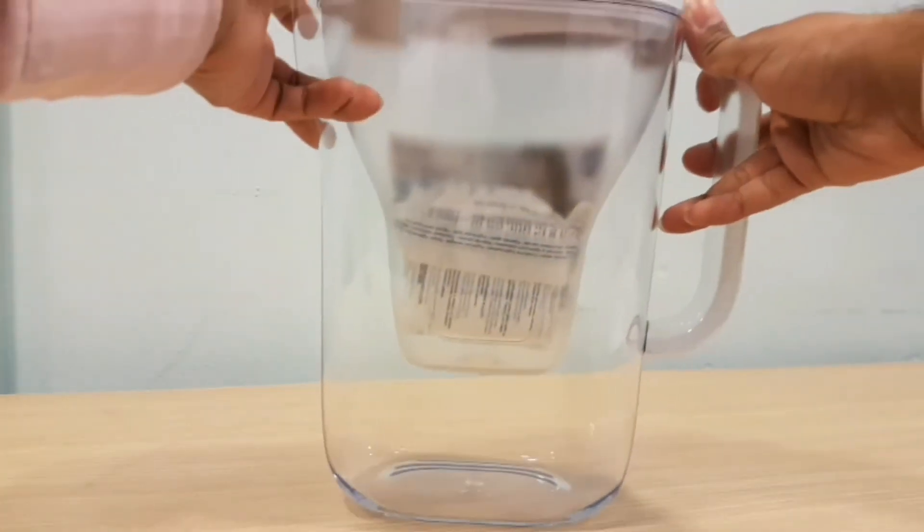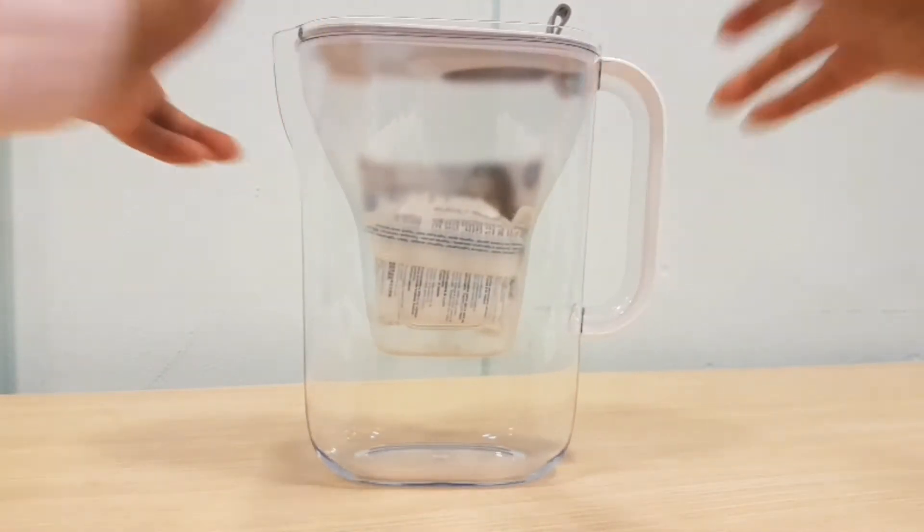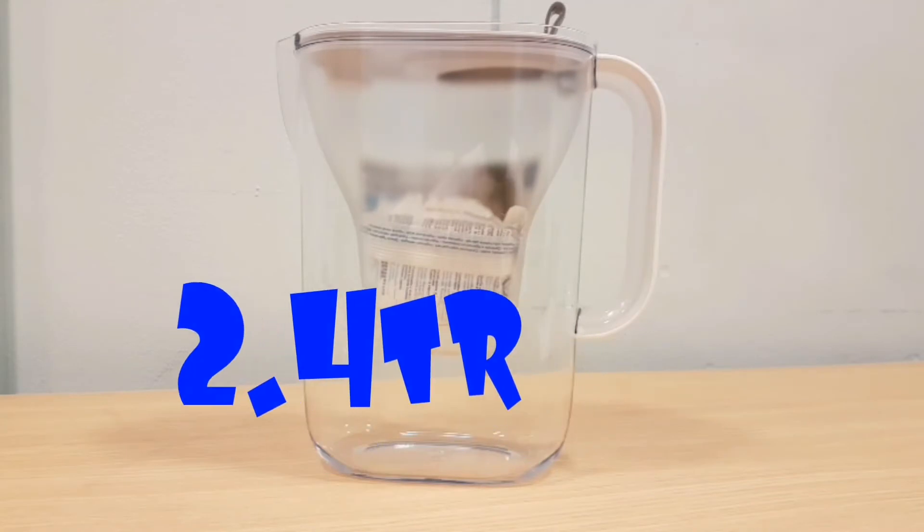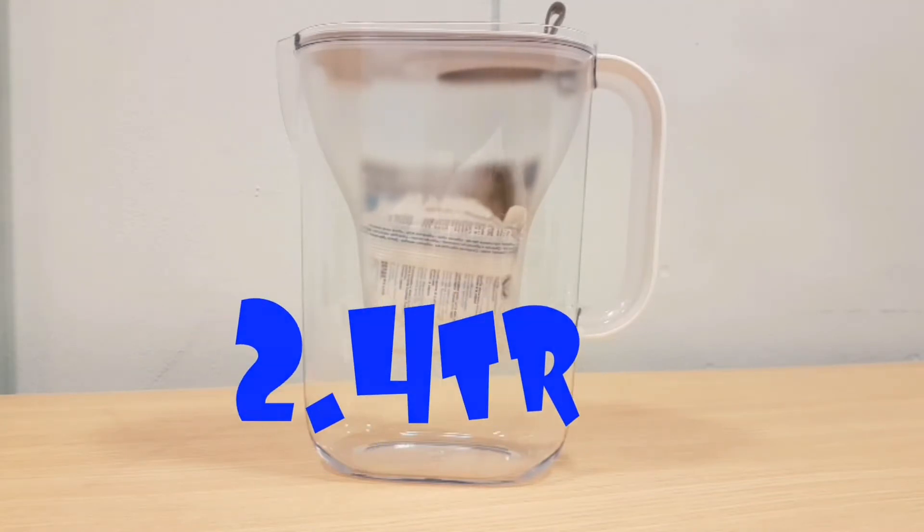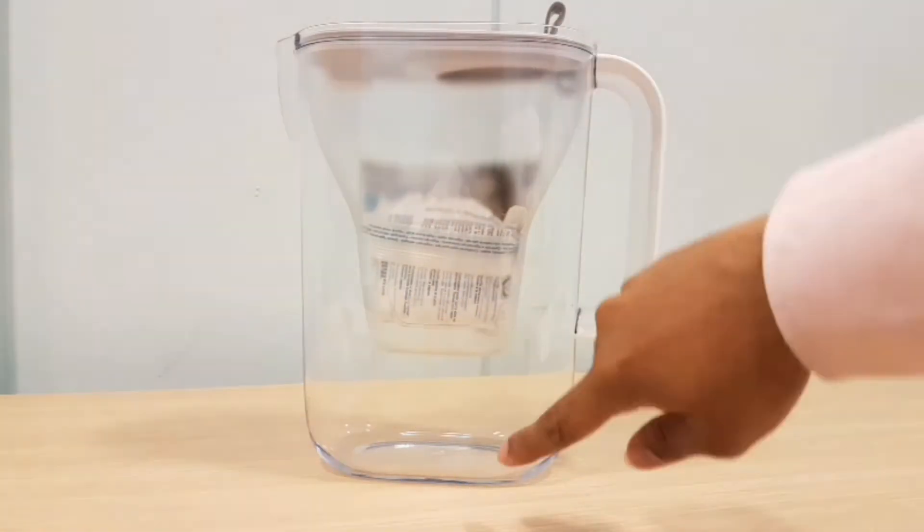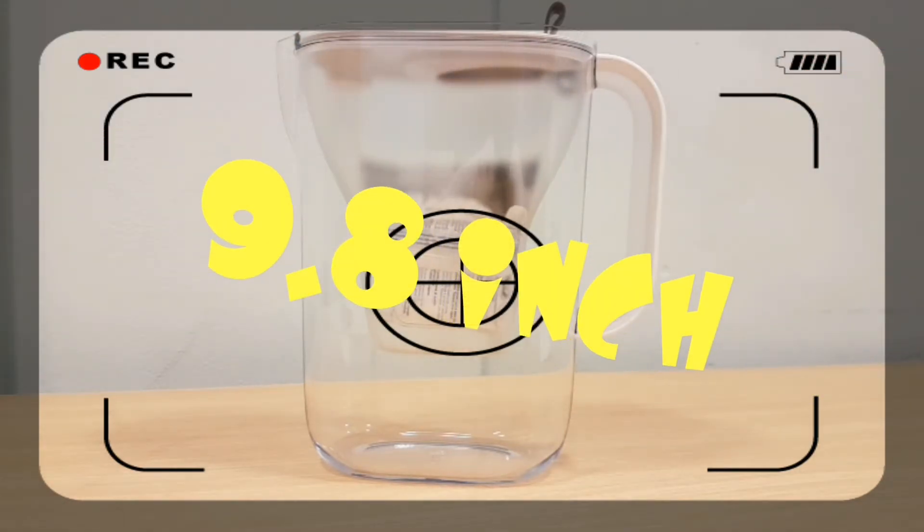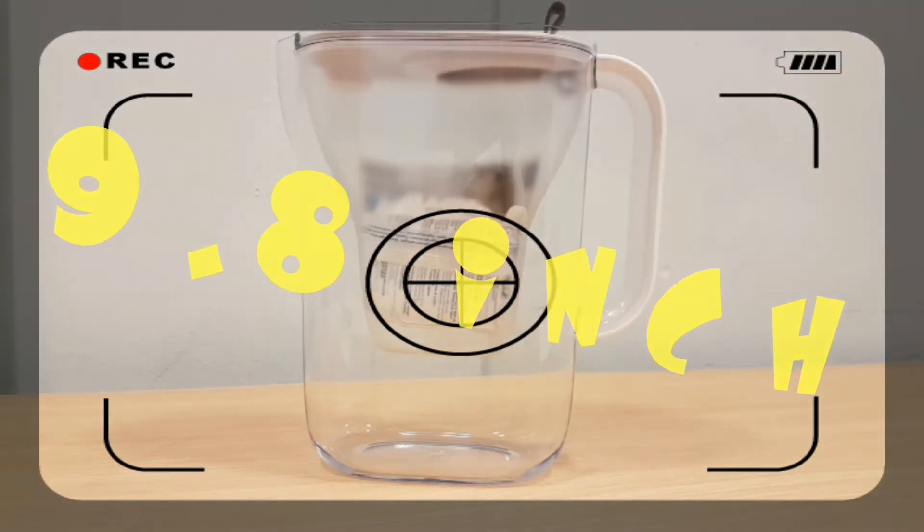The sizing wise: it is 2.4 liters, height is 25 centimeters, and width if you go from rim to here is 24 centimeters. So good size, good amount of water you can put in there.